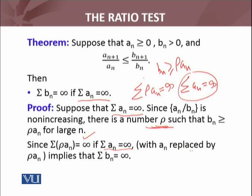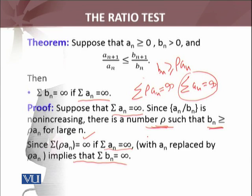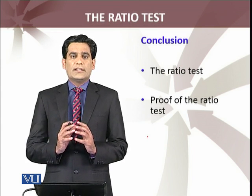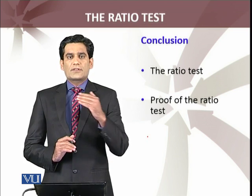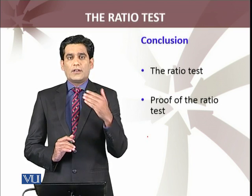So summation ρ · aₙ is divergent to infinity, and since bₙ ≥ ρ · aₙ, the larger series summation bₙ must also diverge — because if the smaller series diverges, the larger one certainly does too. This completes the proof of the second part. We have proved the ratio test using the previous theorem about convergence and divergence of series.